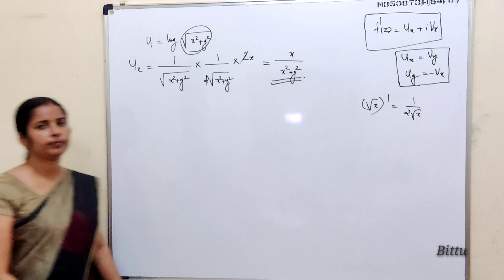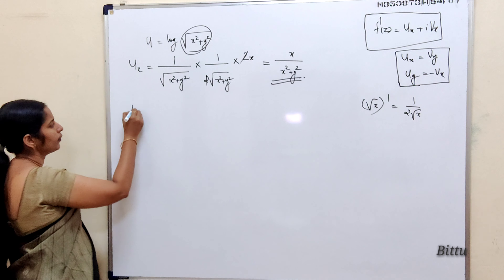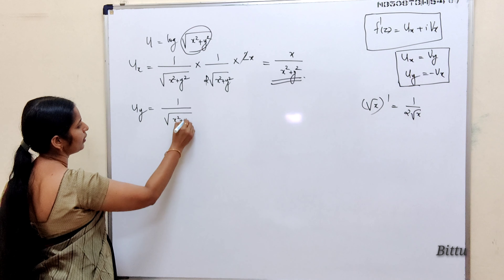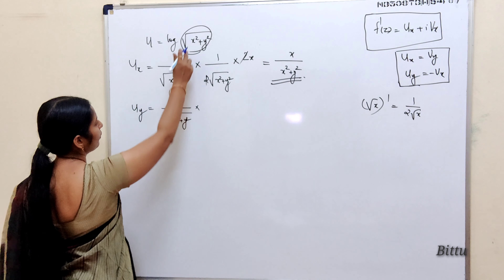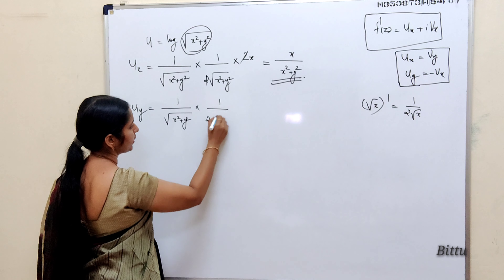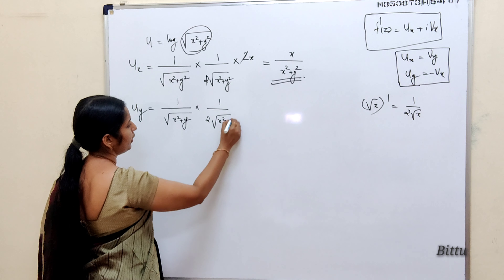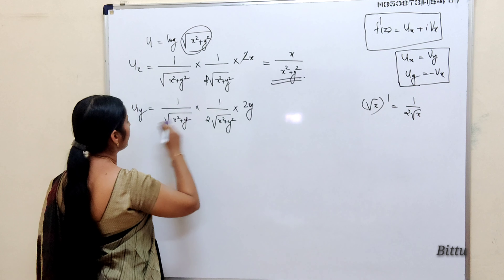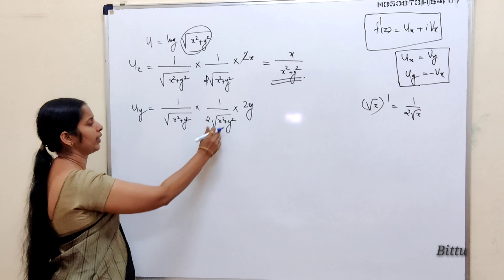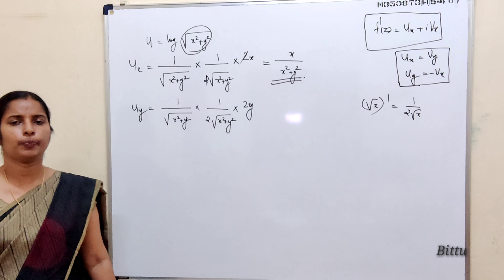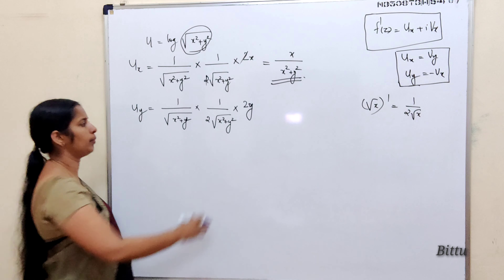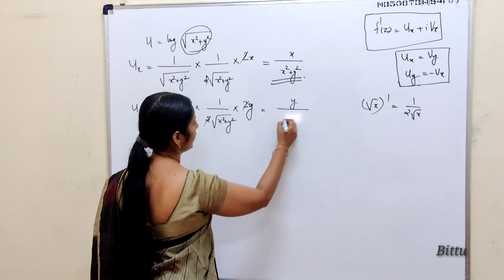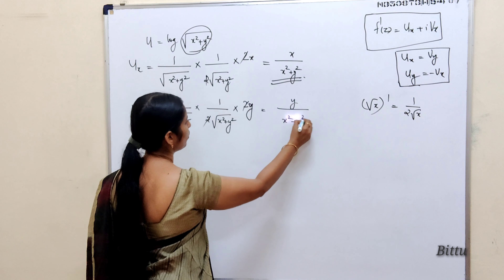Similarly, ∂u/∂y = 1/(√(x²+y²)) × 1/(2√(x²+y²)) × 2y. We are differentiating with respect to y, so the partial derivative of (x²+y²) with respect to y is 2y. This simplifies to y/(x²+y²).